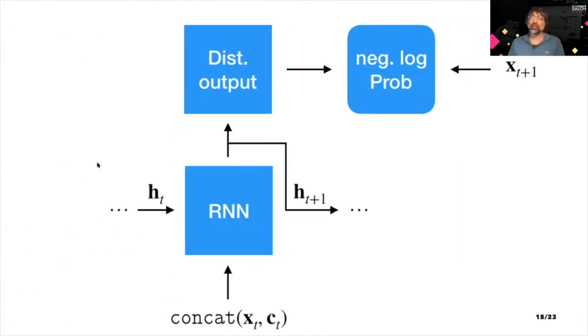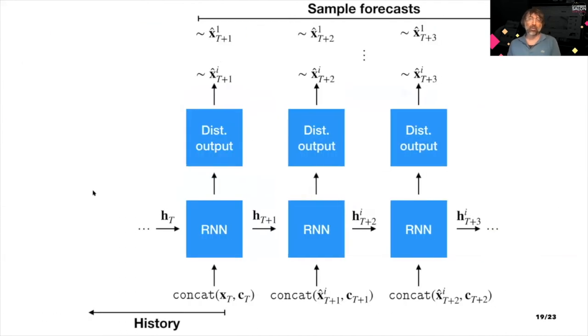Just schematically, the change is not so different from the point forecasting one. We replace the point forecasting output now with a module that outputs the parameters of some distribution, and our loss now changes. Instead of some point estimate loss, we maximize the log likelihood of that distribution given the ground truth data at the next time point.